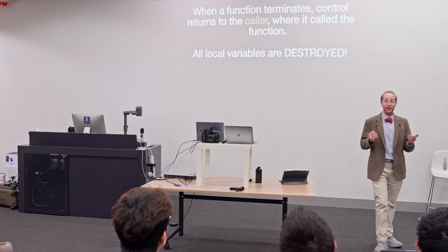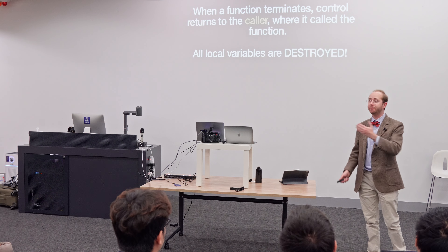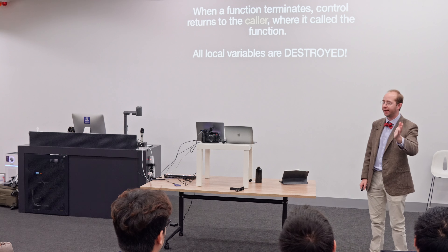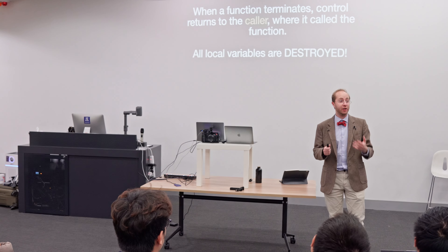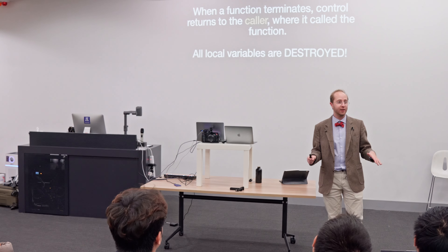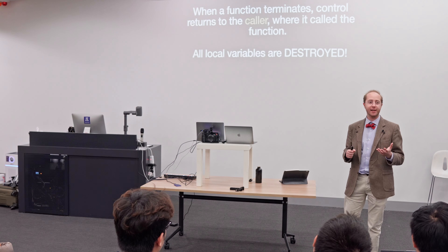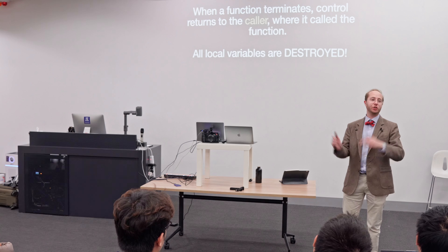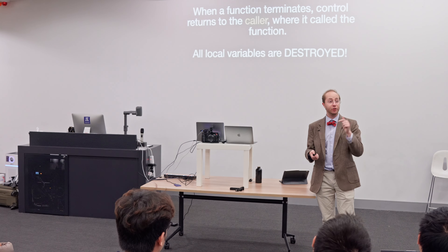When a function returns, execution of the program goes back to the caller at the very same point where the function was initially called. When the function returns back, any variables that the function used are destroyed. There's a subtlety here: C doesn't actually delete things from memory when they're destroyed — rather it just stops keeping track of them. So if you poke at memory you might still find the values, but they shouldn't be accessible and the program makes no promises about their value. Once the function terminates, you shouldn't try and use any of that memory again unless you're recreating new variables.